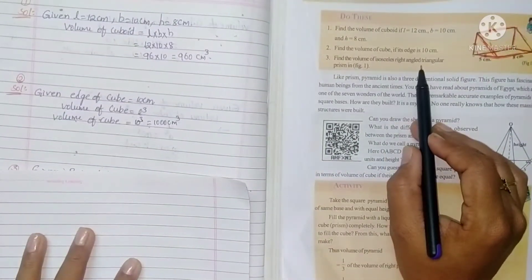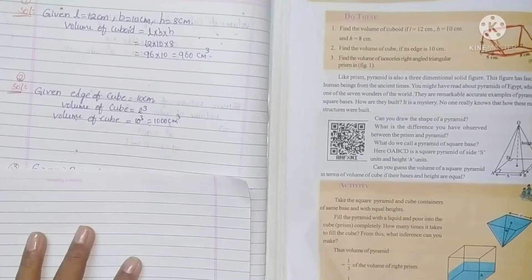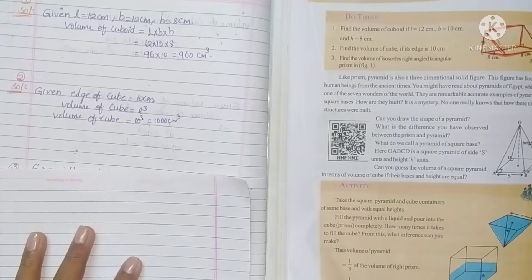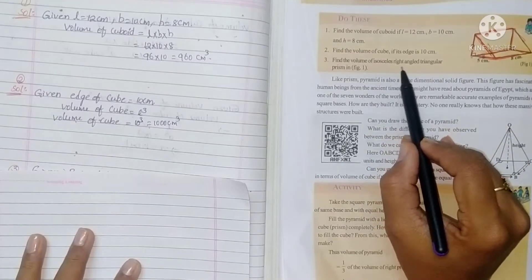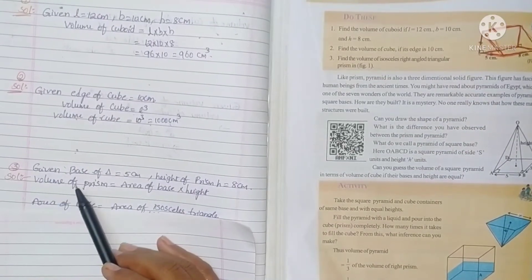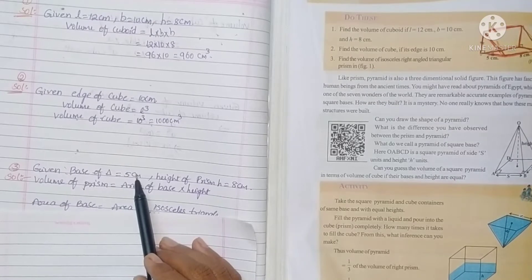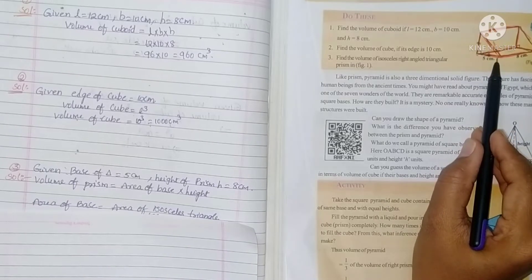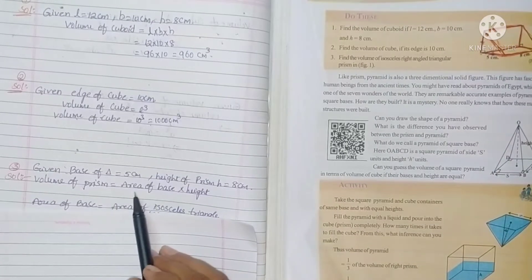Third one: find the volume of isosceles right-angled triangular prism. The formula for volume of prism is area of base into height. They are telling isosceles right-angled triangular prism. Write the given: base = 5 centimeters and height = 8 centimeters.